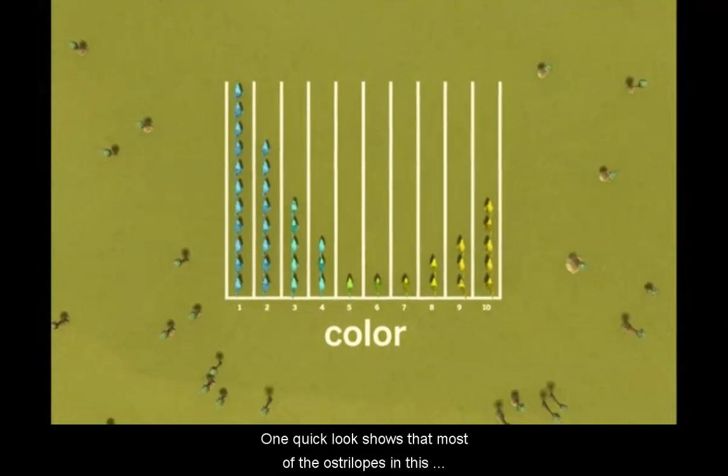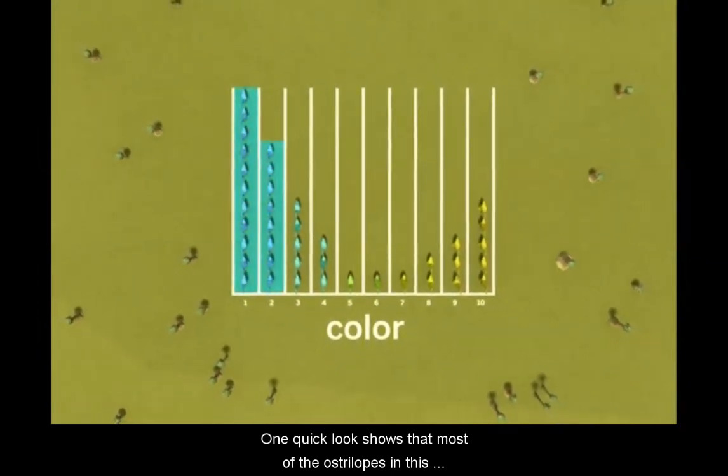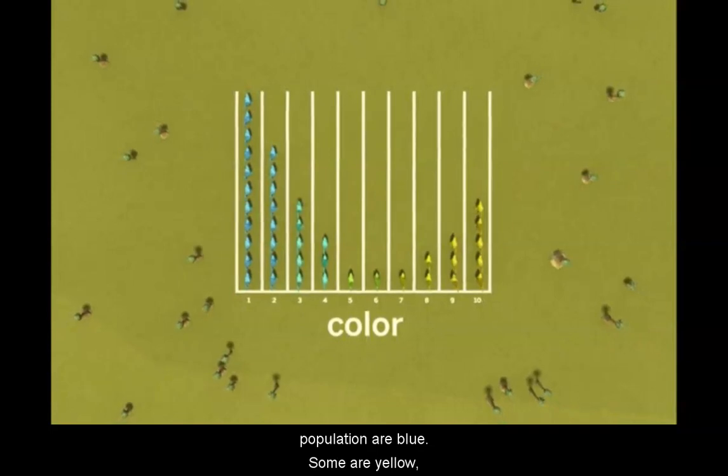One quick look shows that most of the ostrilopes in this population are blue, some are yellow, and a small amount are green.